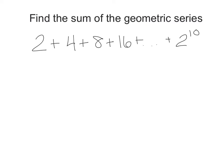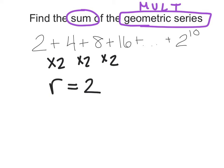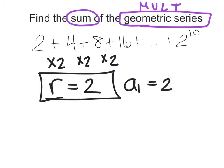Let's get into some harder ones. Find the sum of the geometric sequence. I'm going to highlight the word sum, telling me I can use sigma notation or the formula. Because it says geometric, I'm strictly looking for something to multiply by — not add. It can't be both; it's either all adding or all multiplying. I'm multiplying by 2 each time, so my ratio is 2 and my first term is 2.